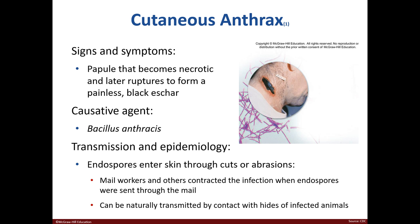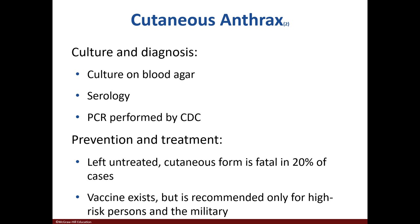Cutaneous anthrax causes a papule on the skin that eventually dies and ruptures, then forms a black piece of dead tissue called an eschar. Bacillus anthracis, a bacterium, is the causative agent. The mode of transmission is by direct contact with endospores, which can occur through cuts or abrasions. This form of anthrax can be identified by culturing on blood agar, serological means, or PCR. Ciprofloxacin and other antibiotics can treat it, but if untreated it can be fatal 20% of the time. Vaccines are available for high-risk individuals and the military.